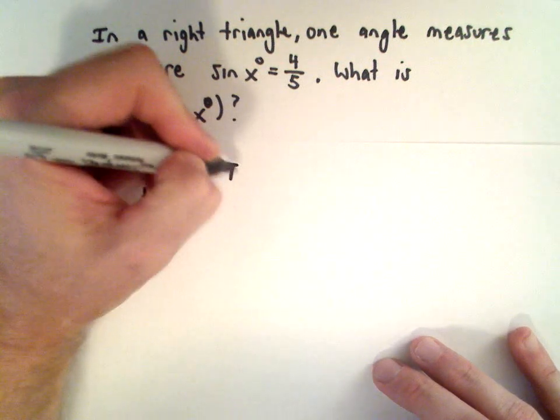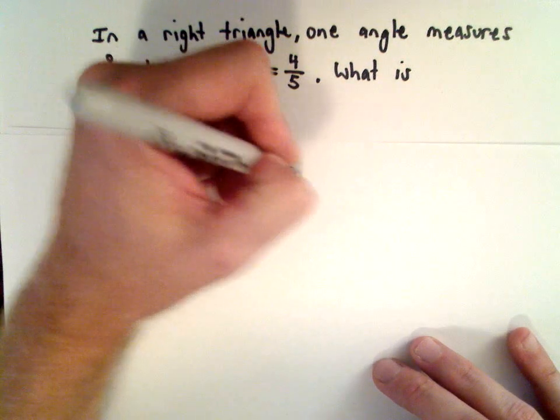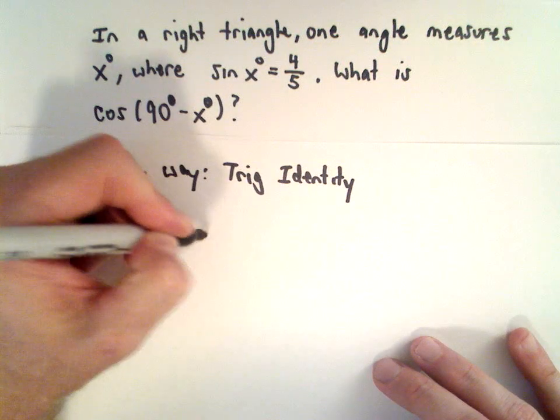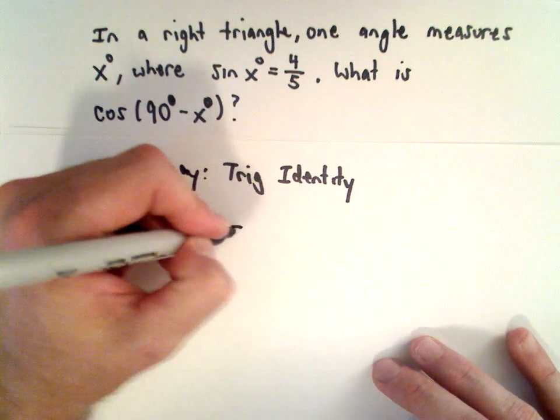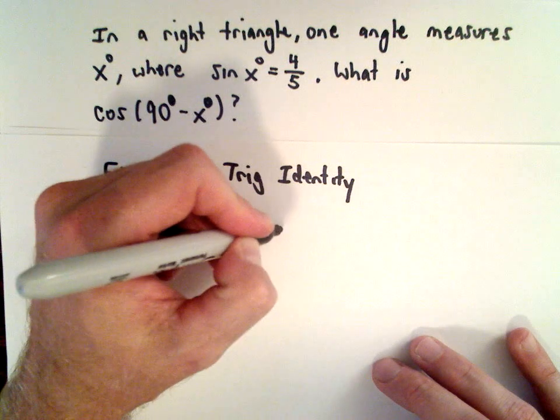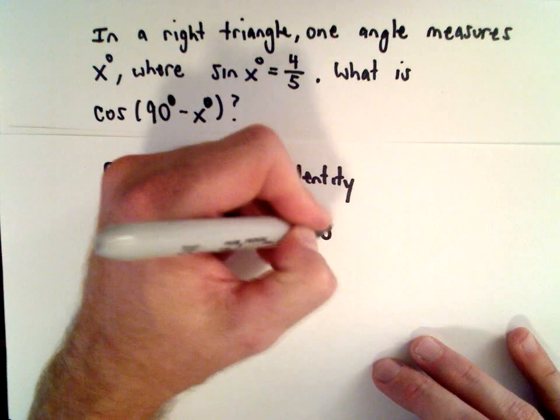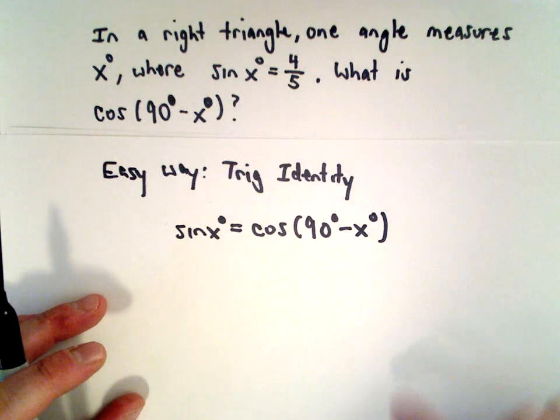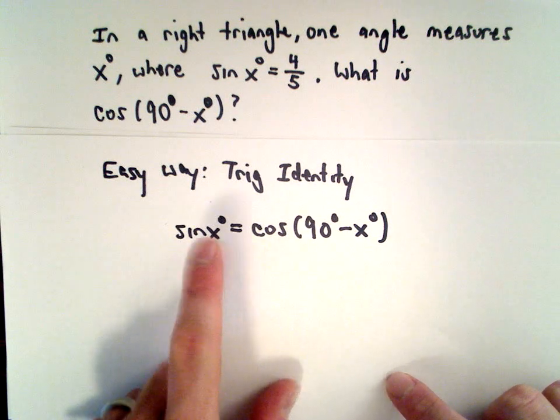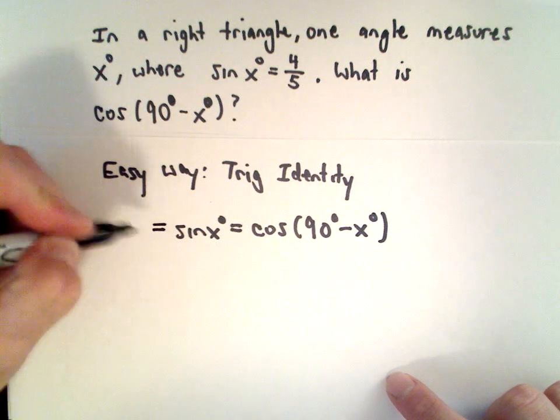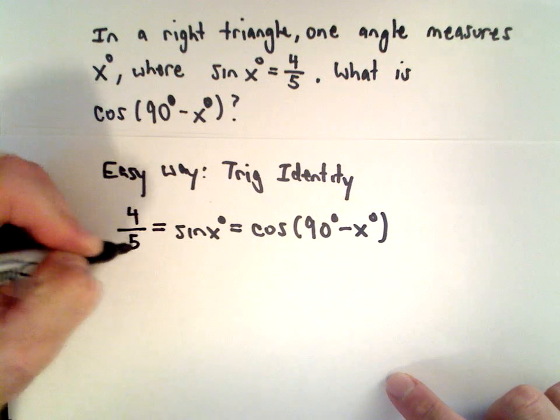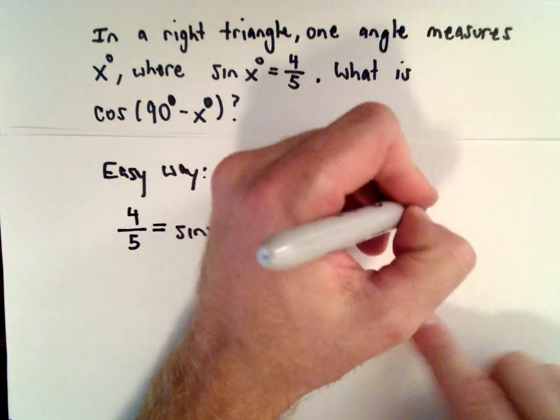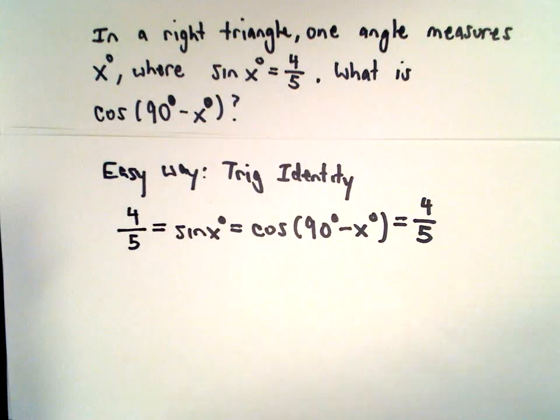Is to know the trig identity. There's a trig identity that says sine of x degrees equals cosine of 90 degrees minus x degrees. These values are the same. So we're given that sine of x degrees equals four-fifths, and therefore cosine of 90 degrees minus x degrees is also four-fifths.